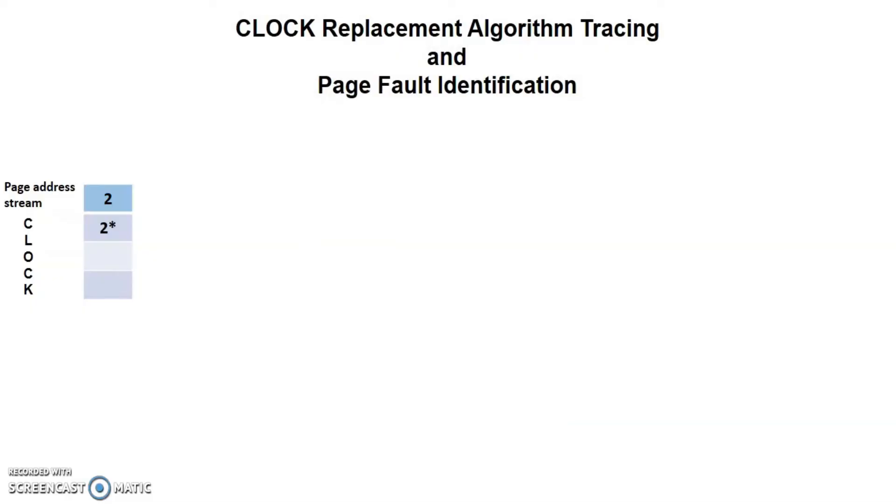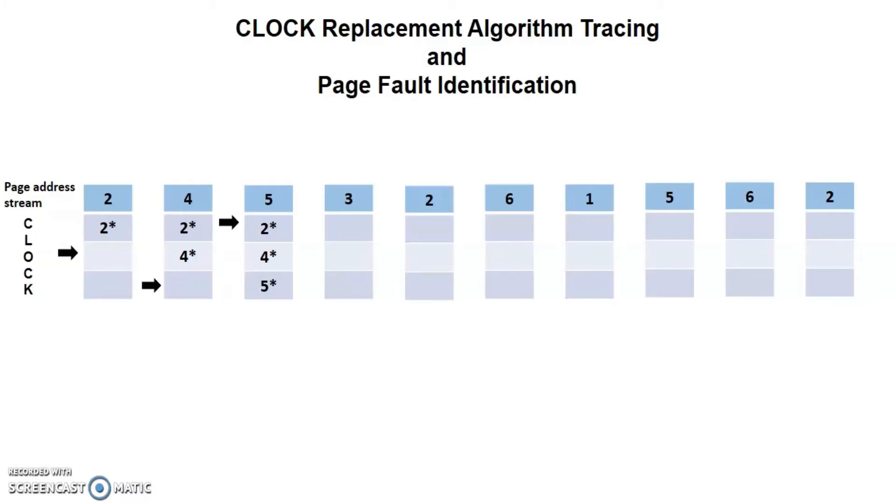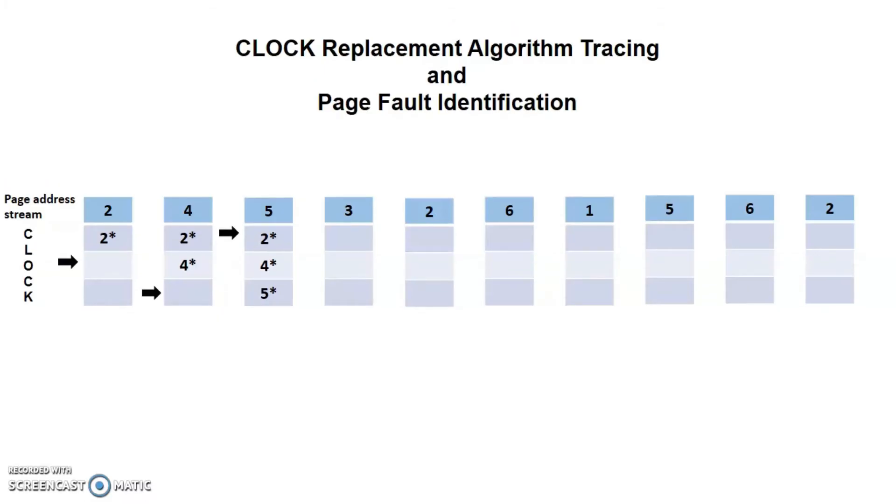For the first 3 page address streams, we can just simply add them to the frames. It is by default that when a page is initially loaded in the empty frame, the use bit is 1. After page 2 enters, the pointer will move to the next frame. Same goes with page 4 and 5. Notice that when 4 enters, the pointer will move to frame 3 and when 5 enters, the pointer will move and back to the square 1.